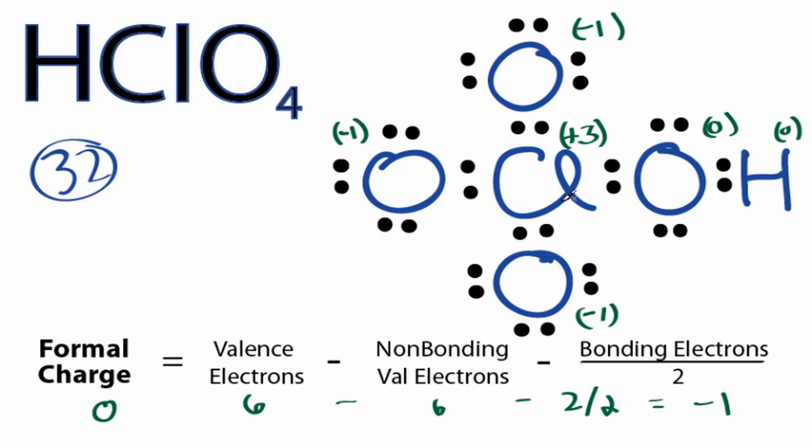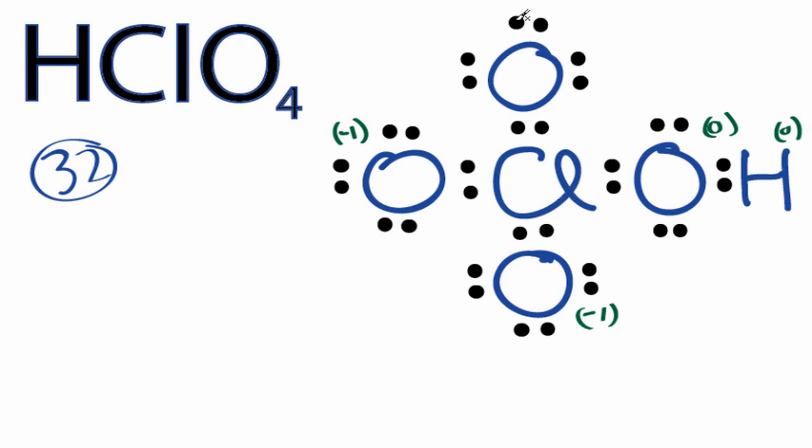we can form a double bond with the oxygen and the chlorine right here. We'll move these two valence electrons to the center and share them. When we recalculate our formal charges, chlorine now has a +2, so it's been decreased by 1, and the oxygen has a formal charge of 0. We'll need to form double bonds on this oxygen and this oxygen to bring those to 0, and the chlorine.